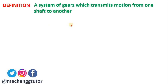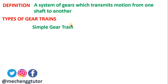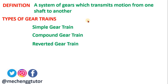Now we shall see what are the different types of gear trains. The four types are: first, the simple gear train; second, the compound gear train; third, the reverted gear train; and lastly, the epicyclic gear train. We shall now see each one by one.